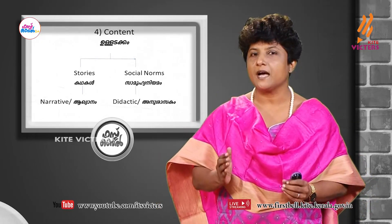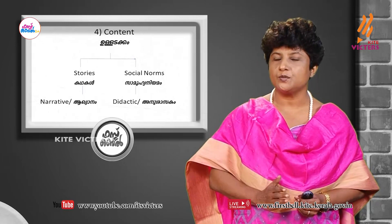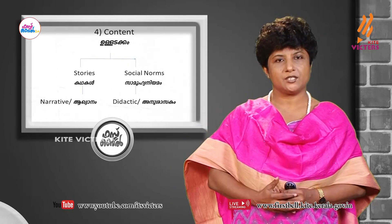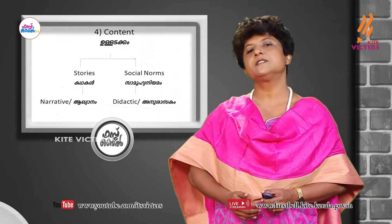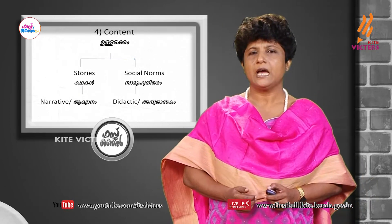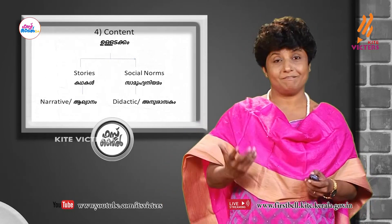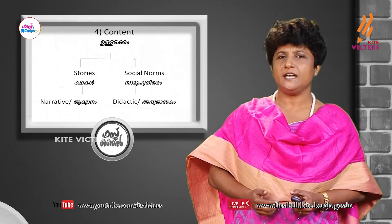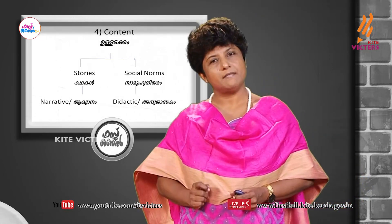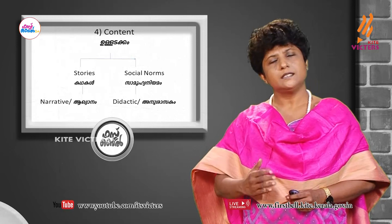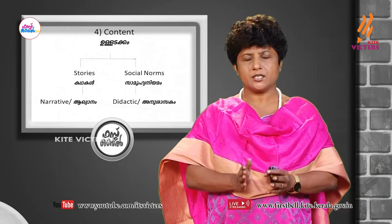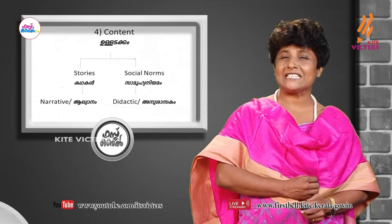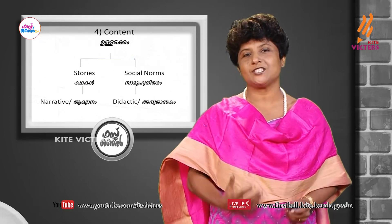The fourth element is content. The content of Mahabharata is divided into two parts: stories and social norms. Stories are designated as narrative; social norms are called didactic. One thing we have to keep in mind is that it's not a watertight division. The story of Mahabharata is highly dramatic and it's a moving story.